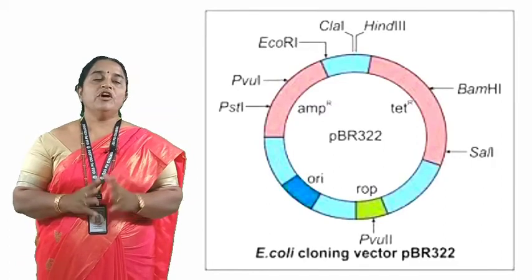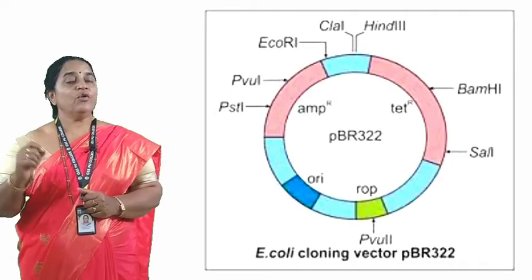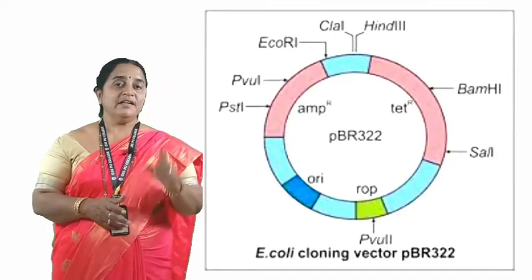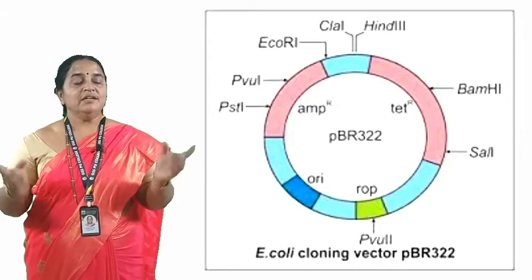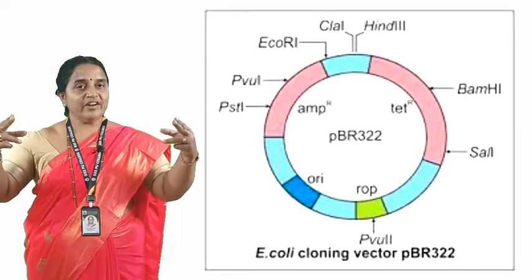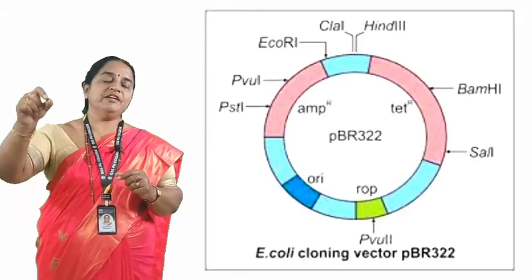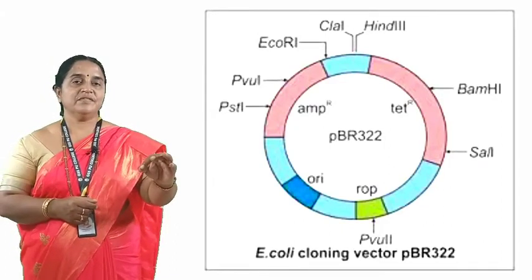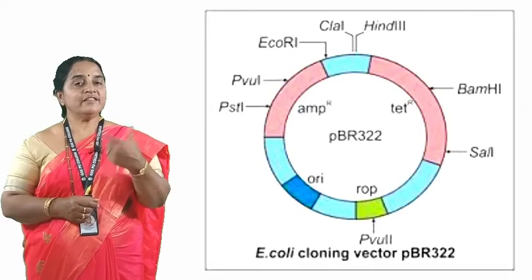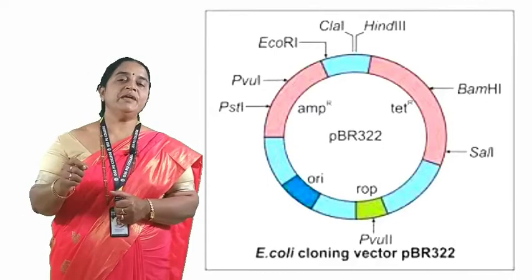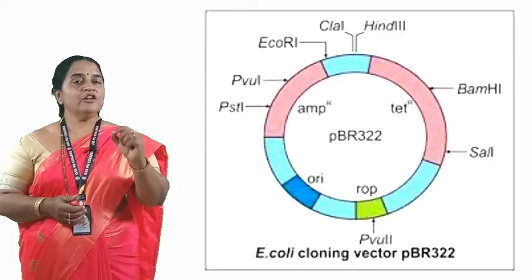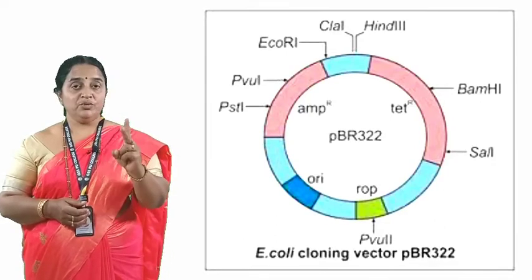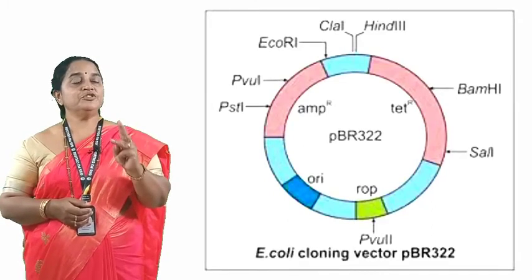Any vector must have three features. First, it should contain an ORI site — the origin of replication site — which stimulates obtaining multiple copies by replication. Second, it should have cloning sites, which are palindromes recognized by specific REN; the REN restricts and produces staggered ends so that the gene of interest can be inserted. Third, it should have selectable marker genes, which are antibiotic resistance genes that help in the selection of transformants.